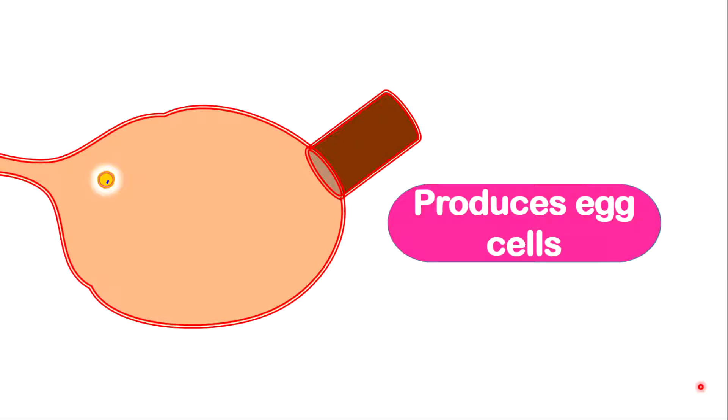The ovaries are also important in producing egg cells. Now let's look at this ovary. Notice there is an egg cell. At this stage, it is called the follicle, which is an immature egg. The follicle is what is responsible in producing estrogen.